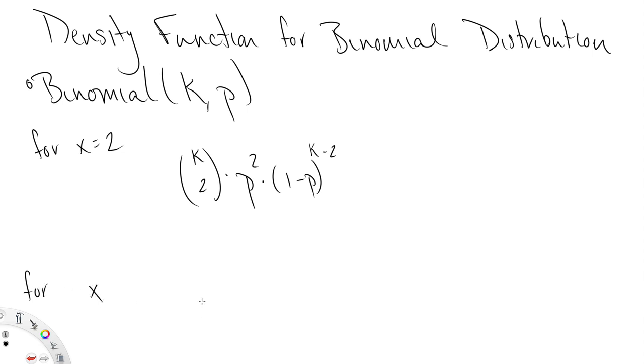Let's generalize that then just a little bit. For x, whatever x might be, it could be any integer 0 to k, there are k choose x ways to observe x 1's. Since we got x 1's, we have p to the x, and then 1 minus p to the k minus x. And in fact, this is the density function for the binomial distribution written out generally in terms of k and p, for whatever integer k is, and whatever probability we have of the underlying Bernoulli.